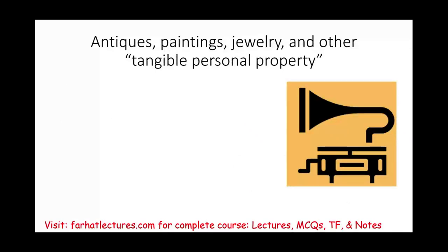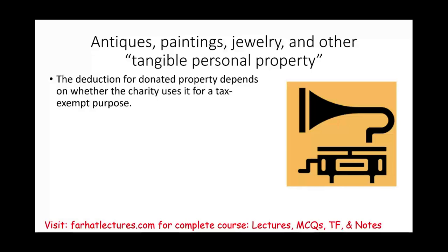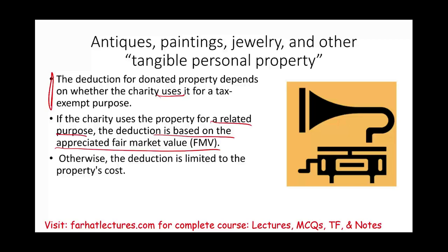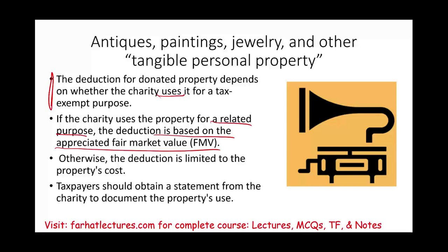For antiques, paintings, jewelry, and other tangible personal property, the deduction depends on how the charity uses the donated item relative to its tax-exempt purpose. If the charity uses the property for its related purpose — such as donating a painting to a museum — the deduction is based on the appreciated fair market value. If donated to an unrelated charity like the Red Cross or Salvation Army, the deduction is limited to the property's cost basis. You should obtain a statement from the charity documenting the property's intended use.